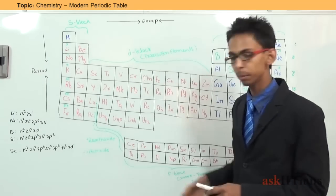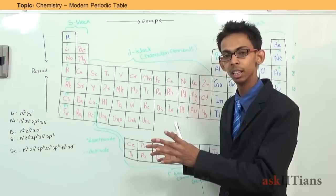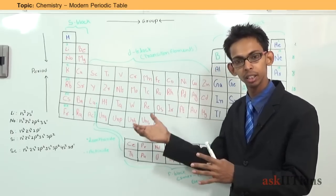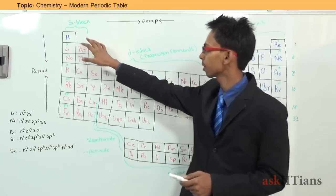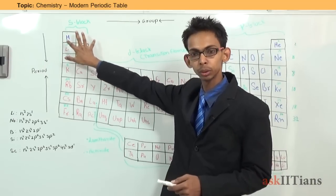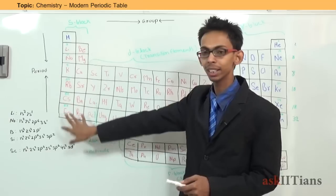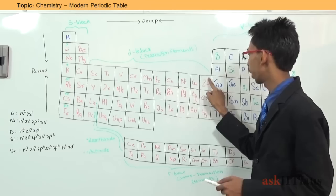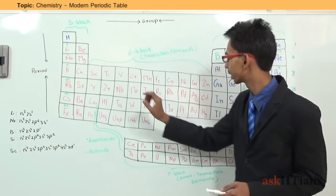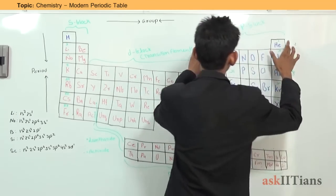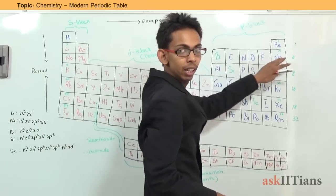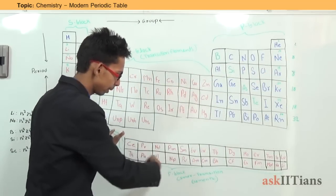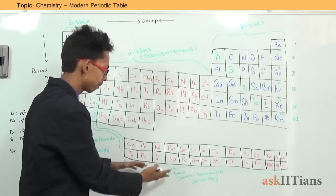In the periodic table, elements have been classified on the basis of their electronic configuration. The first two groups are known as S block elements. From group 3 to group 12 are known as D block elements. From group 13 to 18 are known as P block elements, and the two rows at the bottom are known as F block elements.